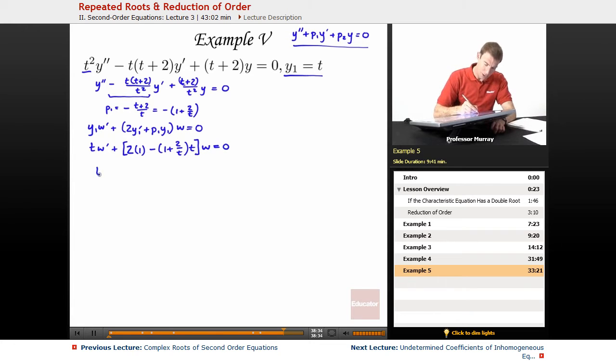So I get tw' plus, let's simplify things in the parentheses here, 2 minus, now I'm going to distribute this t, and I'll get 2 minus t, minus 2/t times t, so minus 2. All this times w is equal to 0. I can simplify things still further. tw' plus, now the 2's cancel, and I'll just get minus tw is equal to 0.